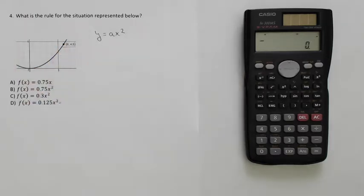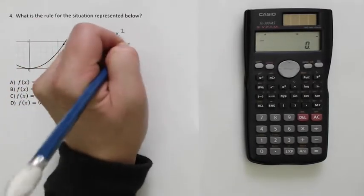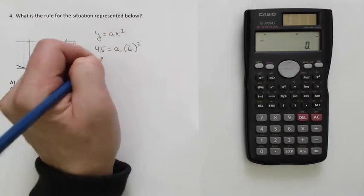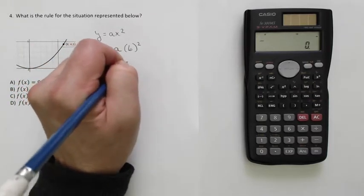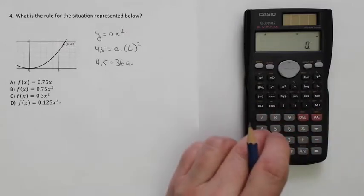So this is a 6, that is a 4.5 for the y. So 4.5 is equal to a times 6 squared, so 4.5 is equal to 36a. And now I'm going to divide both sides by 36.